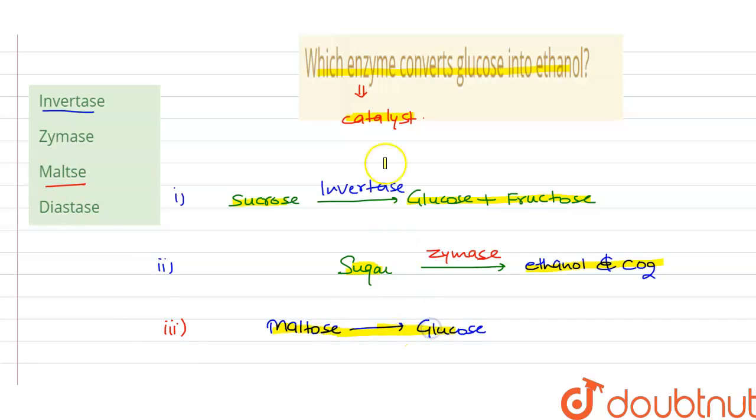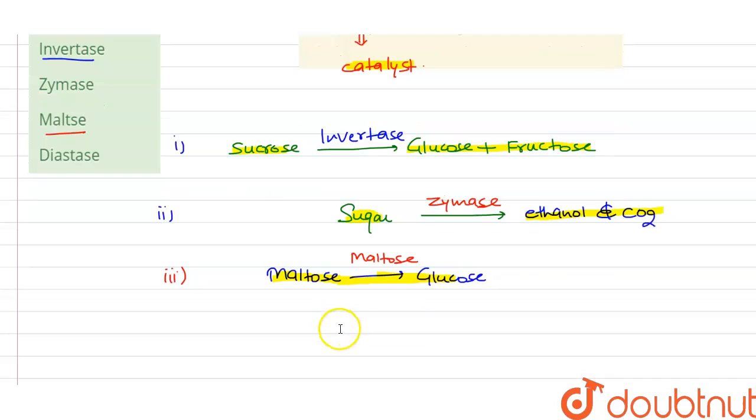Now, the function of diastase. Diastase is an enzyme which catalyzes the breakdown of starch into maltose. This is the function of diastase.